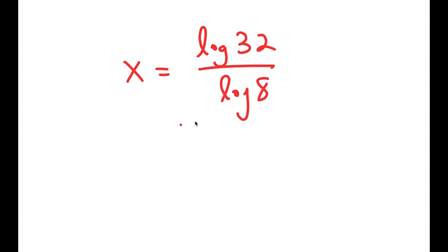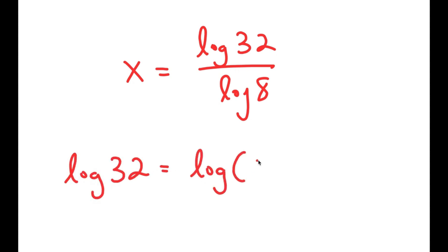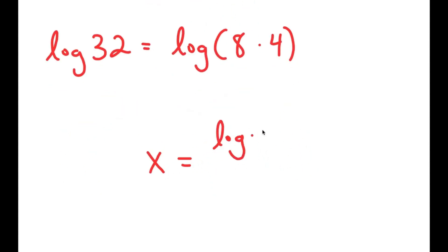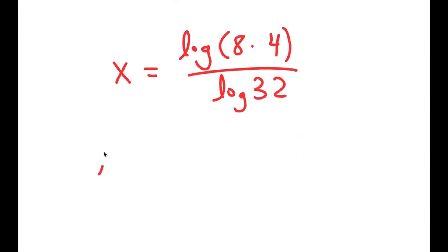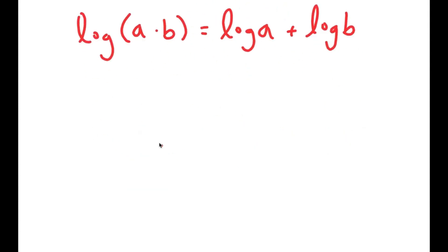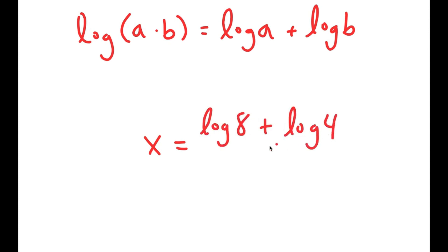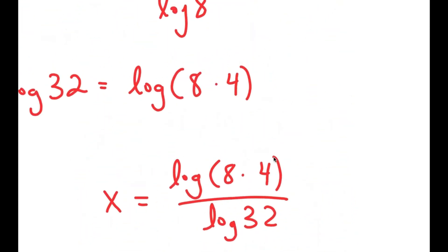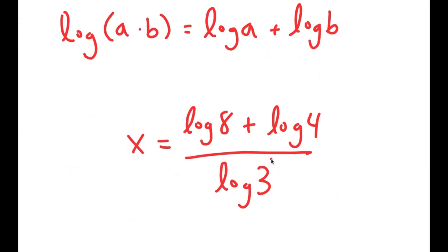Now, log of 32 is the same thing as log of 8 times 4. So I get log of 8 times 4 over log of 8. And if I have something in the form log of a times b, this is equal to log a plus log b. So in this case, this is going to equal log of 8 plus log of 4, all over log of 8.